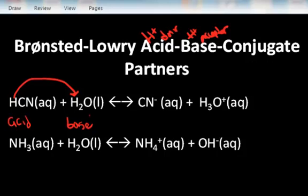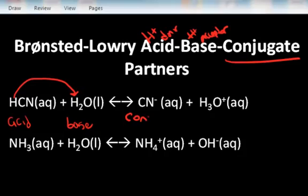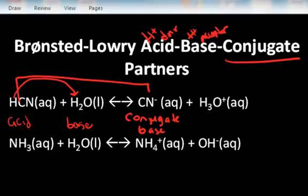In the context of the Bronsted-Lowry acid-base definition, we have conjugate partners. What that means is on the opposite side of the reaction, after the proton has been donated, that remaining anion is called the conjugate partner of the acid. So in this case, the cyanide ion is called the conjugate base partner of its parent acid, which was hydrocyanic acid.